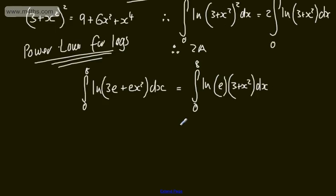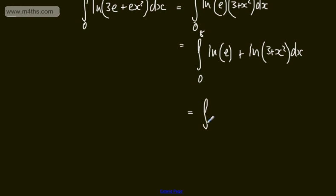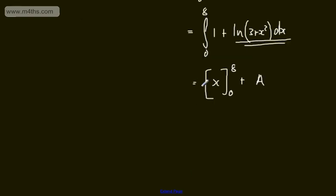Writing this out, using log laws this gives us the integral from 0 to 8 of ln(e) + ln(3 + x²) dx. Since the natural log of e is 1, this becomes the integral from 0 to 8 of 1 plus ln(3 + x²) dx. Splitting this up: the integral of 1 gives x from 0 to 8, which is 8, plus the value a — since we know that integral gives a — therefore we have 8 minus 0 plus a, which equals a + 8.